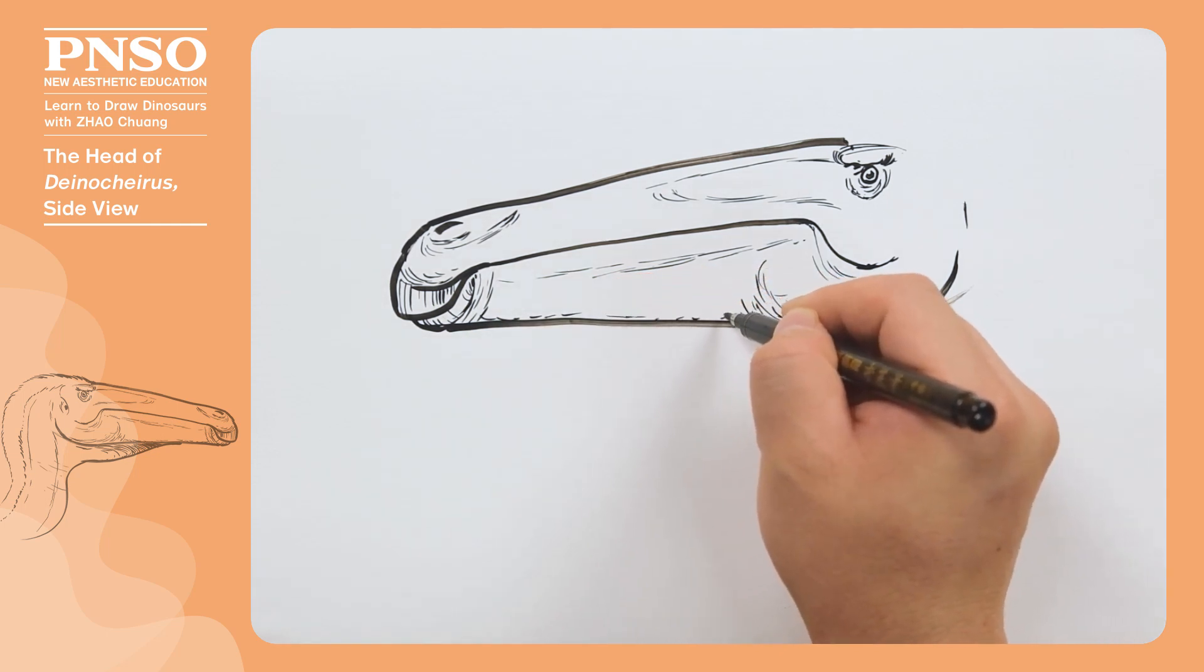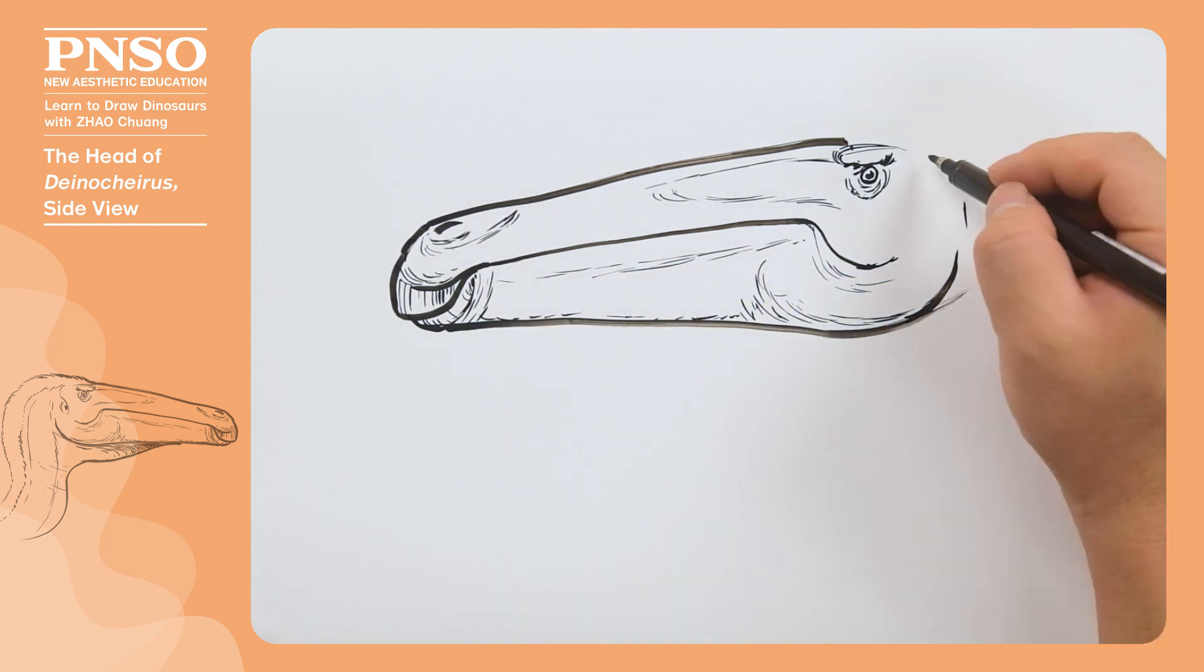Then, draw some textures on the chin to show the thickness. Behind the eyes, at this position, we draw the back half of the temporal fenestra. Then draw one ear here.